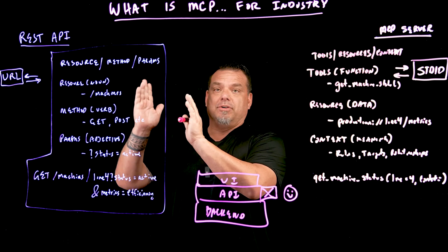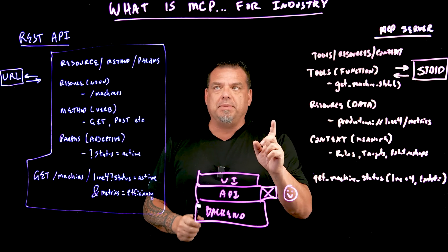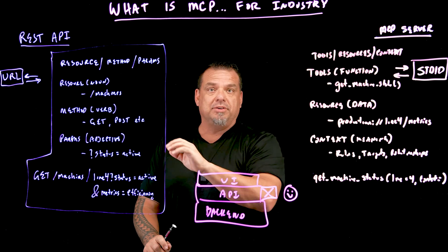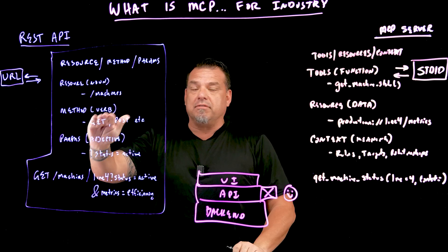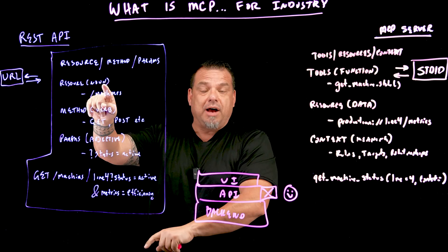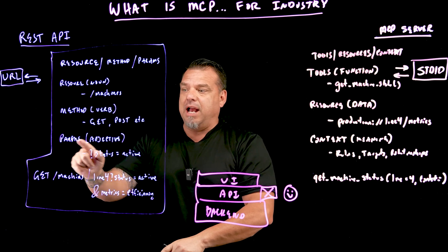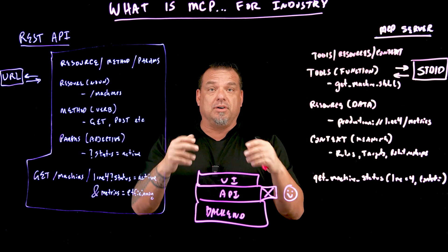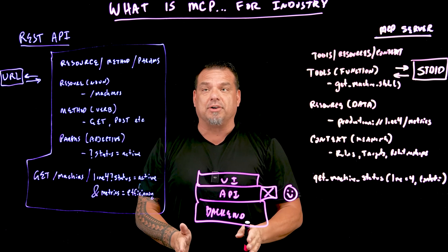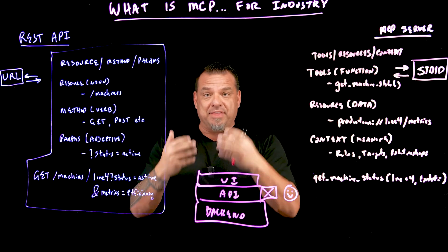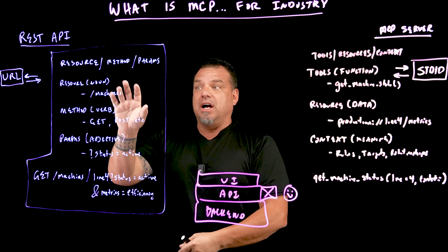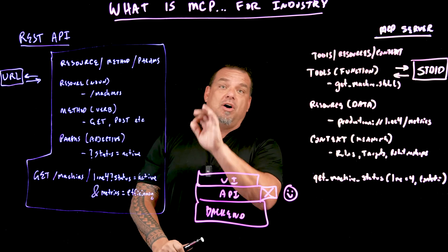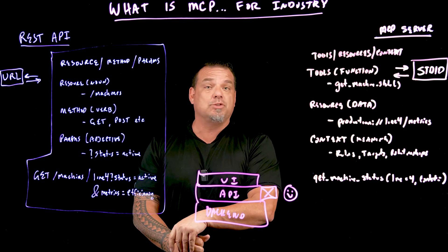Using the traditional model — where I have a REST API, databases, and OPC servers — a human being would have to build a specific integration to automate that process. They would have to write software that interacts through REST in a noun-verb-adjective mode: connect to the resource 'machine' (the noun), use the method GET (the verb), pass in parameters where status equals active, and what returns is a result set that you then write logic to process. The reason you can't just go get the worst-performing line and why is because that's a massive amount of engineering.